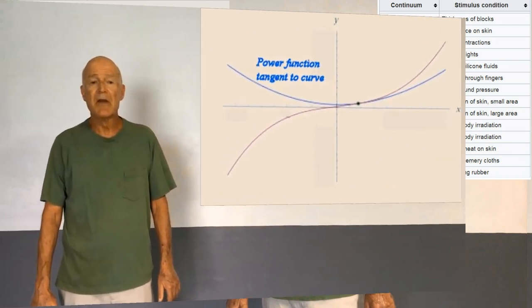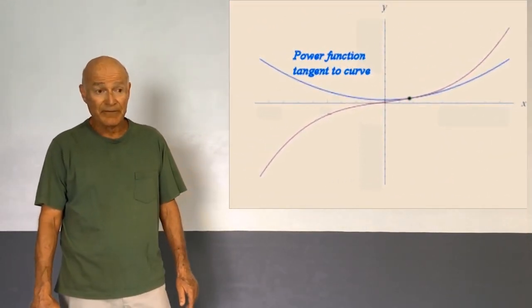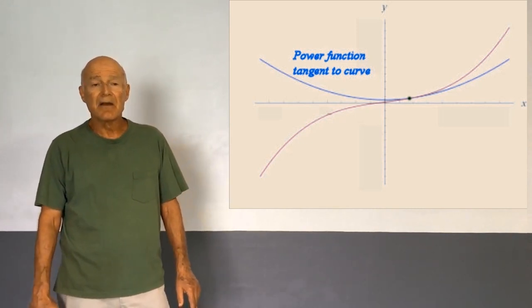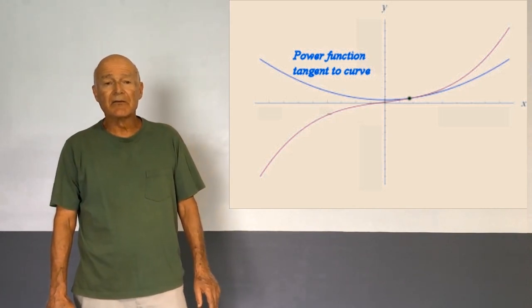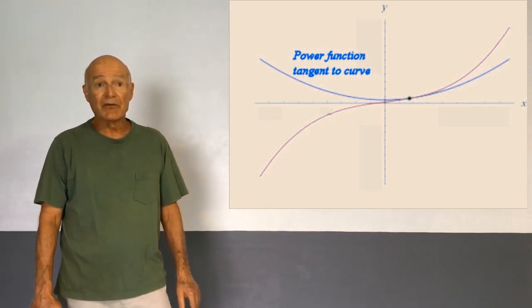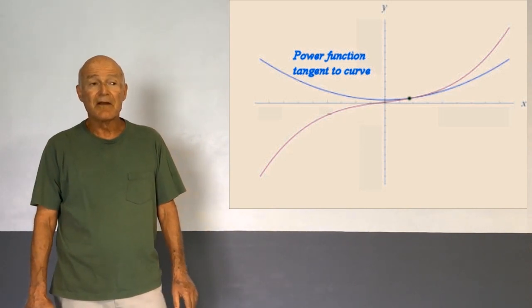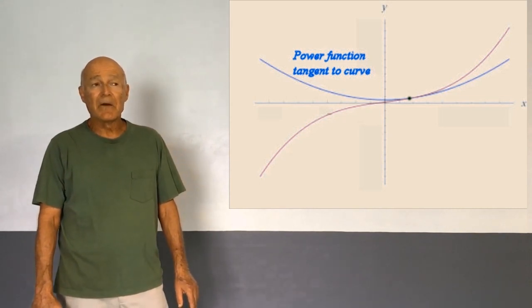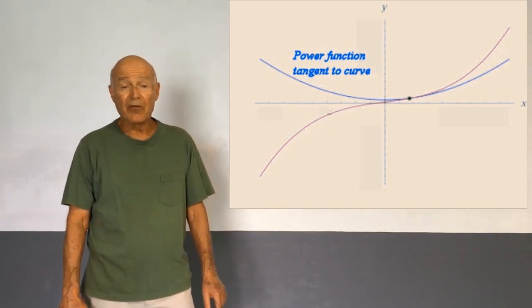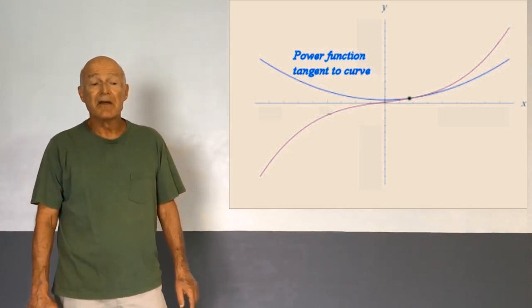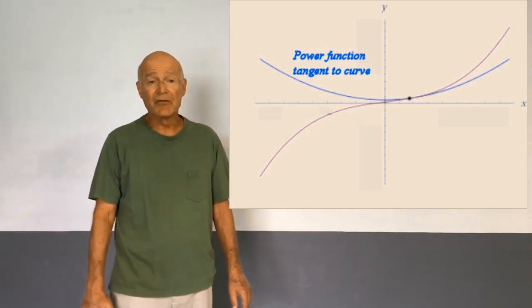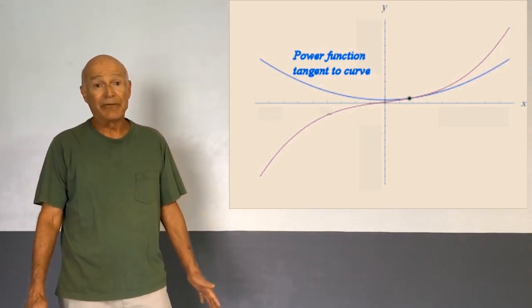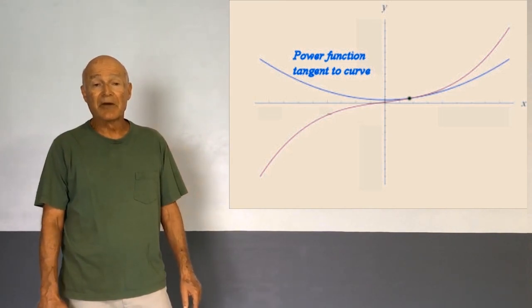Now, if you take the bi-geometric derivative of an arbitrary function, not necessarily a power function, what you get is the bi-geometric slope of the power function that's tangent to the given function at the given point. This gives you another way of approximating the value of the given function. You can use the bi-geometric tangent, which is a power function, to approximate the given function.